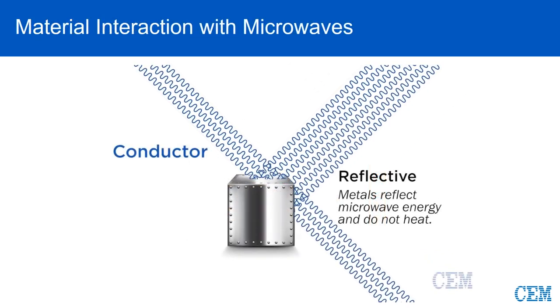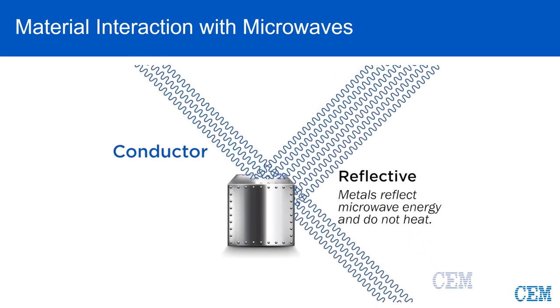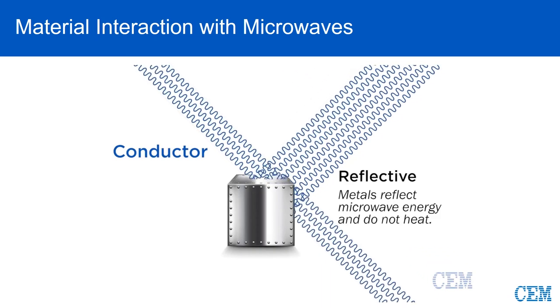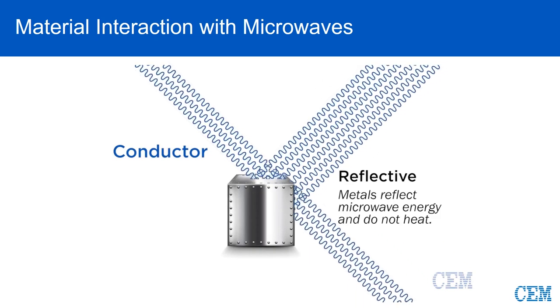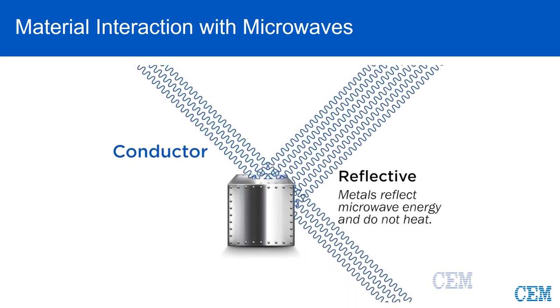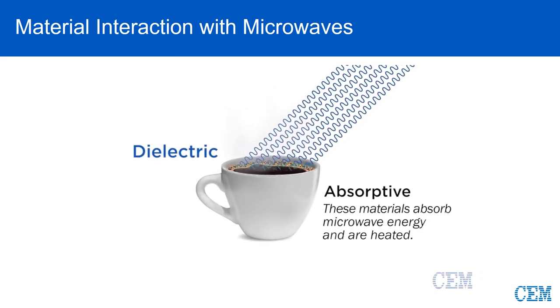When microwaves come into contact with materials, they can behave in different ways. We classify materials into three general categories. Conductor materials are metallic materials that reflect microwave energy and do not heat. Think of the metal walls of a microwave oven. Dielectric materials will interact and absorb microwave energy.